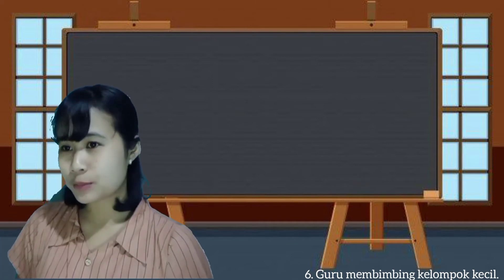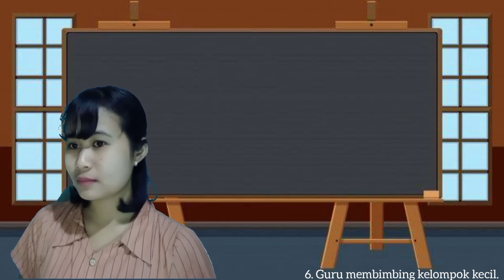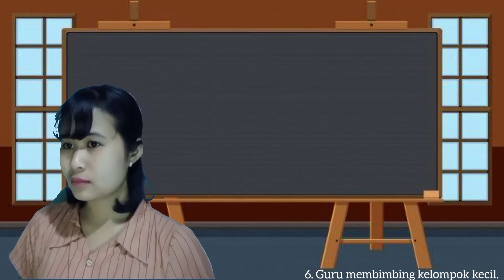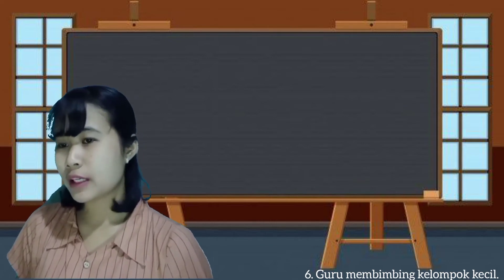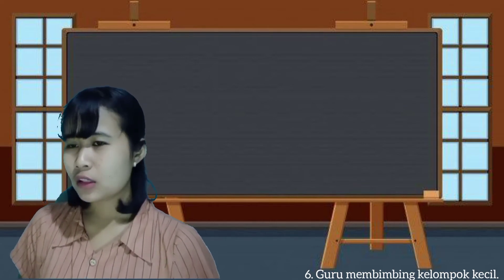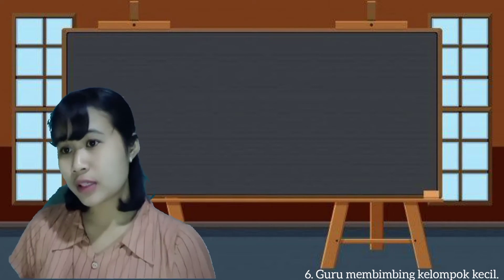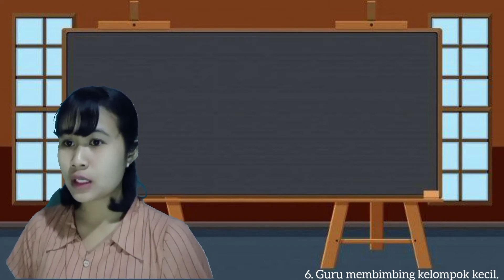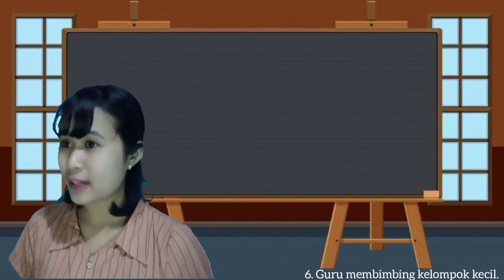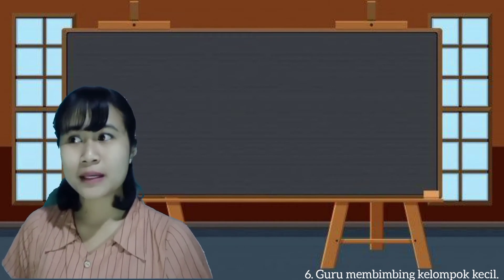How about group two? Do you have any problem? Yes, miss. We got a news about a murder — for the question 'Who,' we're not sure who to write. That's a very good question. In that case, you have to write both the murderer and the victim, because both pieces of information are very important. Got it? Yes, miss. Thank you. My pleasure.